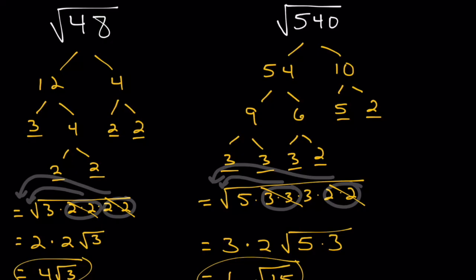And that, as they say, is that. Break down your radicand into its prime factorization by using a factor tree. Circle any pairs of numbers and write one representative outside of the radical, and cross off the pair on the inside. Then multiply the stuff on the outside with the stuff on the outside, and the stuff on the inside with the other stuff on the inside. This will, every time, give you the most simplified radical. I wish you good luck, and I will see you next time.